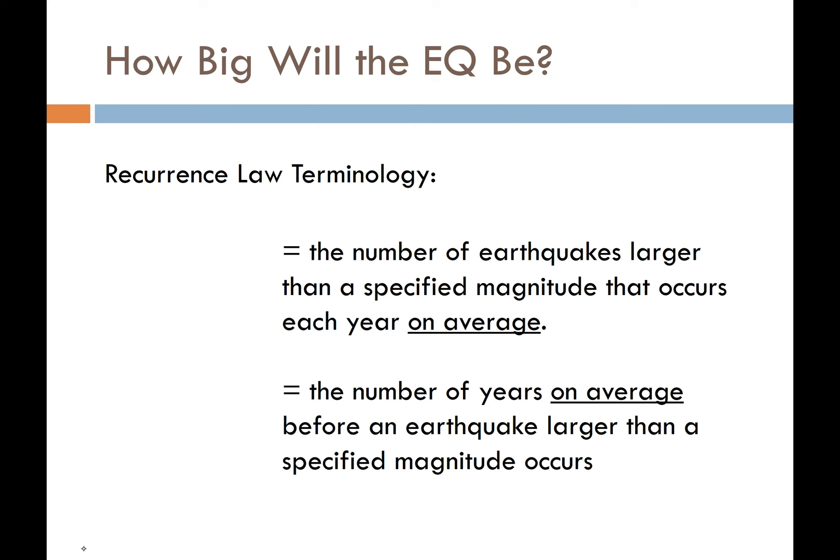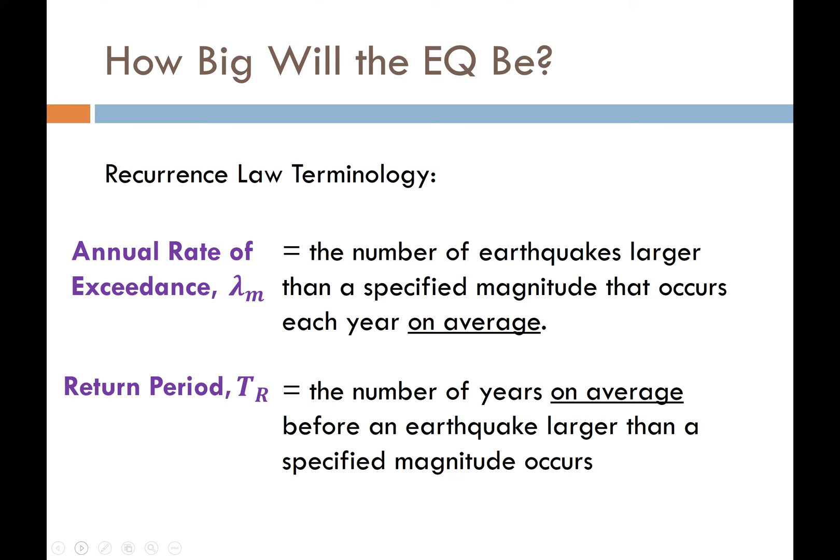Let's talk about some terminology with recurrence laws. The first is the annual rate of exceedance, defined as the number of earthquakes larger than a specified magnitude that occurs each year on average. For example, for a magnitude 7.0 earthquake, the annual rate of exceedance is the average number of earthquakes exceeding magnitude 7.0 on a given fault per year. The return period is the number of years on average before an earthquake larger than a specified magnitude occurs, and it is the reciprocal of the mean annual rate of exceedance.